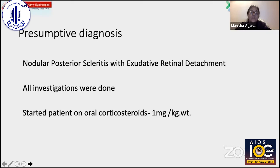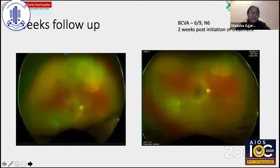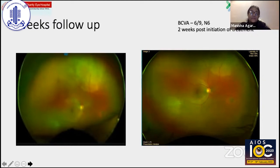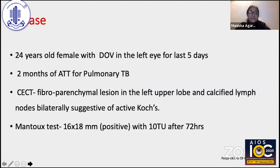All investigations were done and the patient was started on oral corticosteroids. At two weeks follow-up, there was beautiful resolution of the exudative retinal detachment. The patient had recovered a vision of 6/9 N6 and was extremely asymptomatic, not having any pain, and was responding to treatment very well.